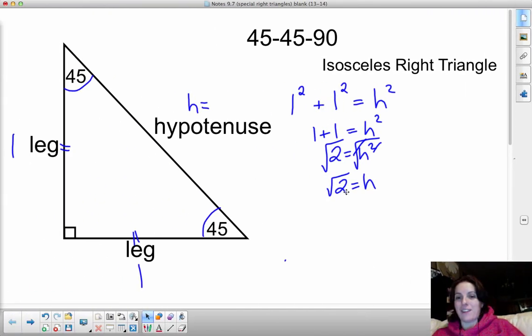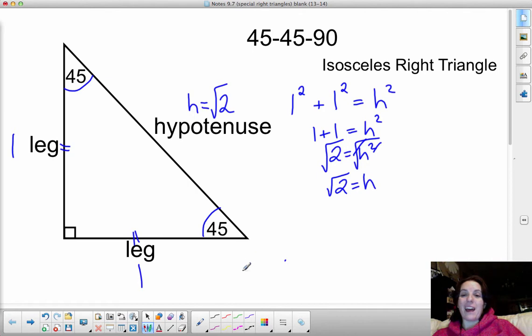Okay, so I'm pretty confident that you got that that h length is the square root of two. So I'm going to go ahead and fill it in. My computer stops freaking out. So h is the square root of two. And I just want you to start to see that pattern.